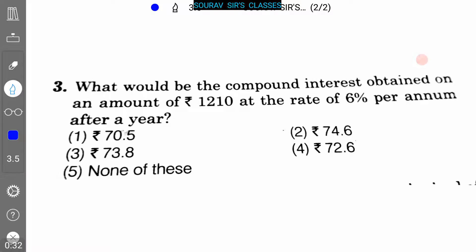Here is our next sum. The question is: What would be the compound interest obtained on an amount of 1210 at the rate of 6% per annum after a year? So we have to calculate the value of compound interest.